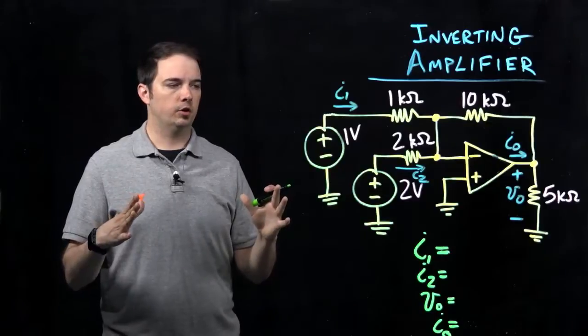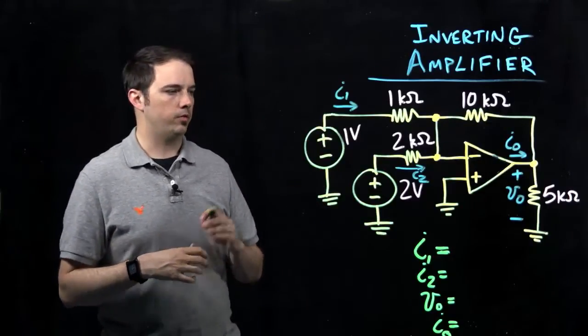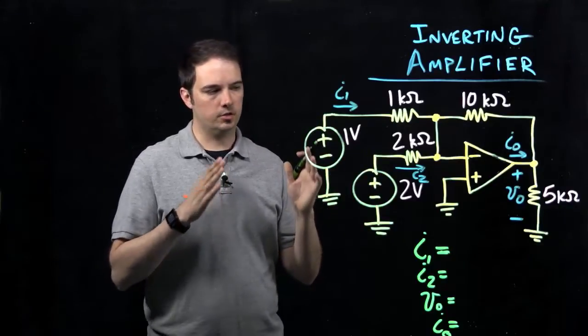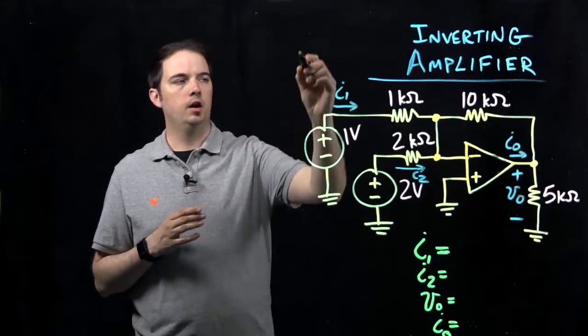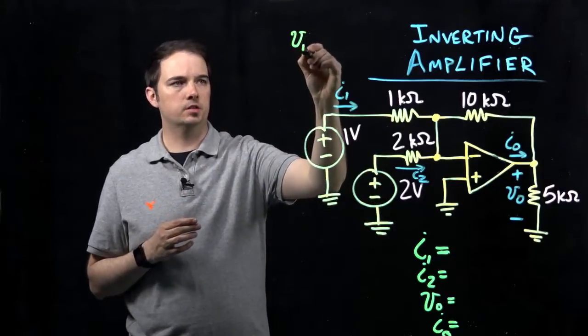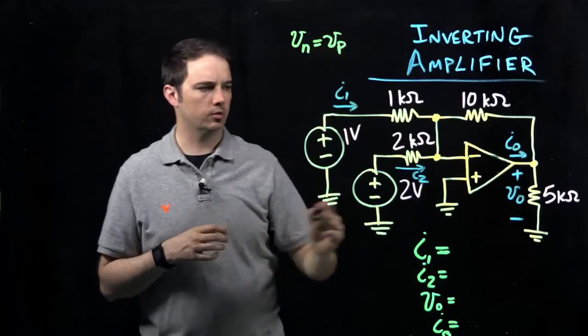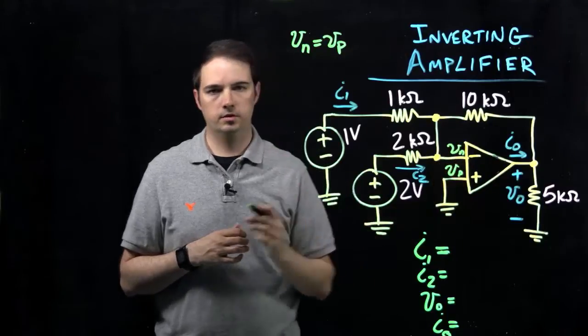The first thing in looking at any op amp circuit is evaluating based on the known input condition. We're assuming this is an ideal op amp operating in the linear mode of operation. That tells us the two input terminals need to be at the same potential. If this is VN and VP, we know they're at the same potential.